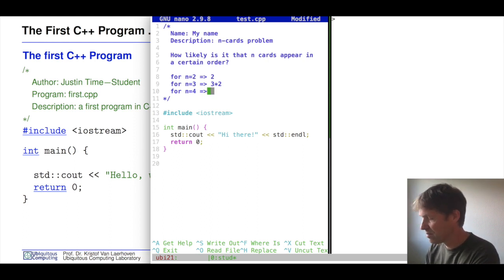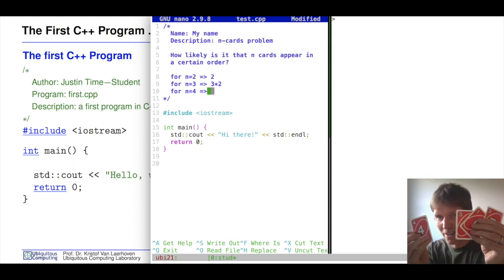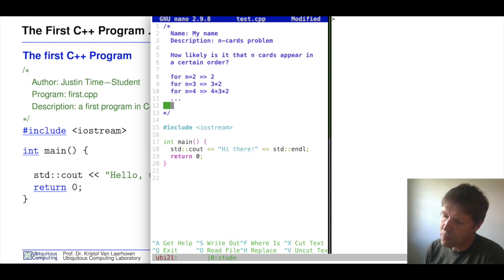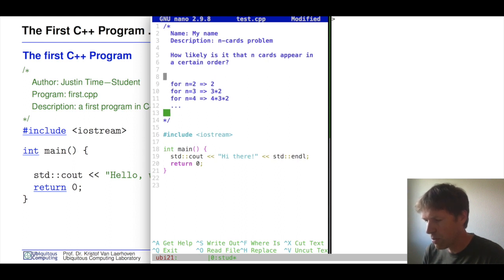For n equals four it is exactly the same. If you have four cards, there are four possibilities of picking the first cards. Let's pick one. Then you remain with three cards, and those three cards just like we saw before have three times two possibilities. So we did four times three times two, and this continues. This is what we can actually do in a program. We can for n being quite large immediately create this number.